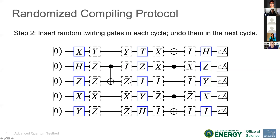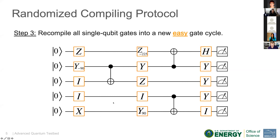We do this for every cycle of easy-hard gates. Finally, we combine all single qubit gates into a new easy gate cycle. And this is what we call our randomly compiled circuit.